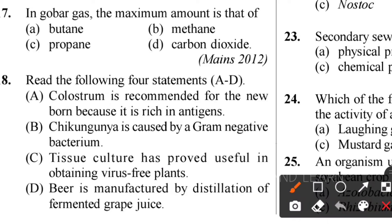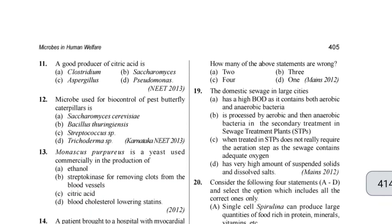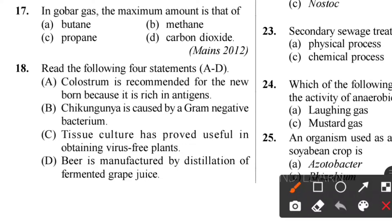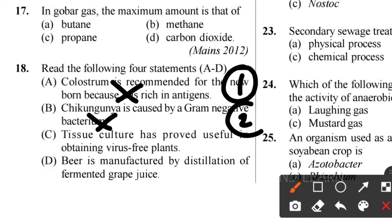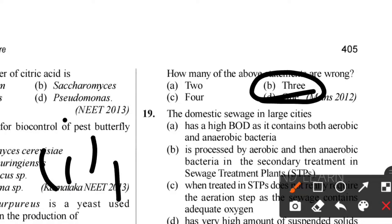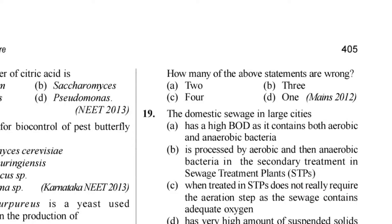Eighteenth question: how many of the given statements are wrong? Statement 1 - colostrum is recommended for newborns because it is rich in antigens - wrong, it contains antibodies, not antigens. Statement 2 - chicken guinea is caused by gram-negative bacteria - wrong, it is caused by a virus. Statement 3 - tissue culture is useful for obtaining virus-free plants - correct. Statement 4 - beer is manufactured by distillation of fermented grape juice - wrong, it is fermentation of barley. So three statements are wrong; option B is the correct answer.